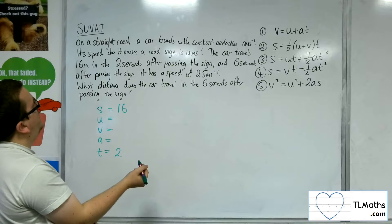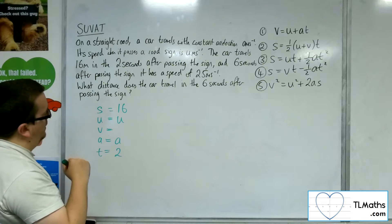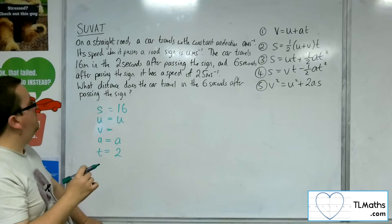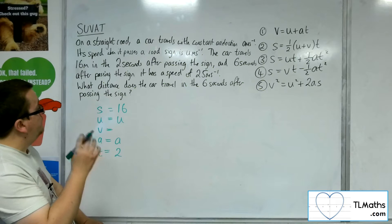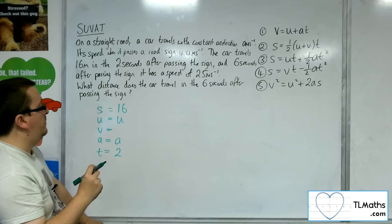We know that the initial speed, initial velocity, is u and acceleration is a. So that's the information that we have there. Now we don't know u, we don't know a. And that's a bit of a problem.